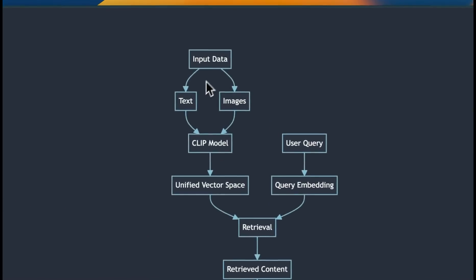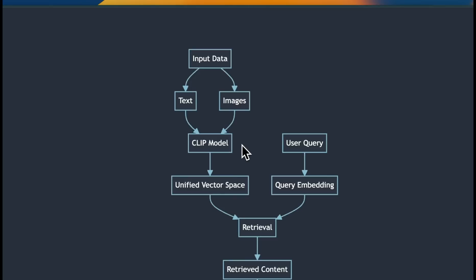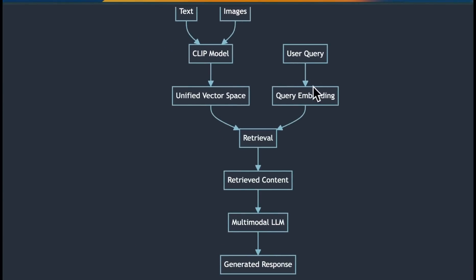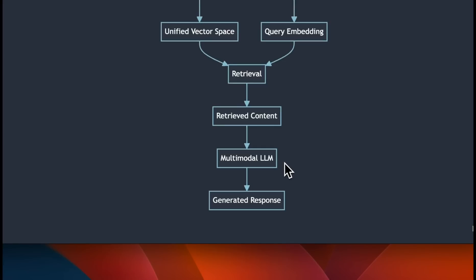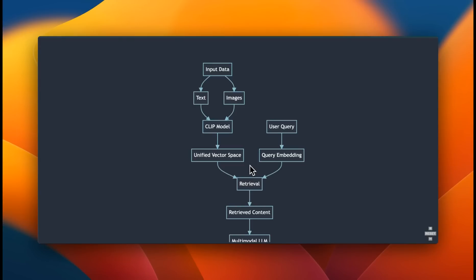The first approach is to embed all different modalities into a single vector space. We extract text and images separately from a document, then create embeddings that work across both images and text — for example using a CLIP model — and put them into a unified vector store. When a user query comes in, we create embeddings for the query, do retrieval on this unified vector space, and pass retrieved documents through a multimodal LLM to generate final responses. This is one of the simplest approaches but requires a capable multimodal embedding model.